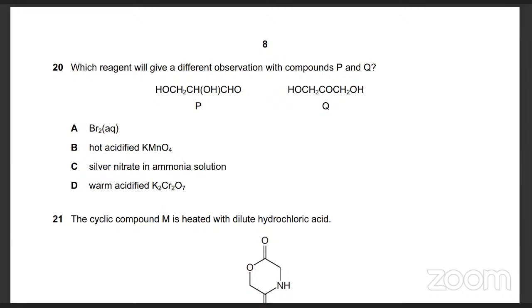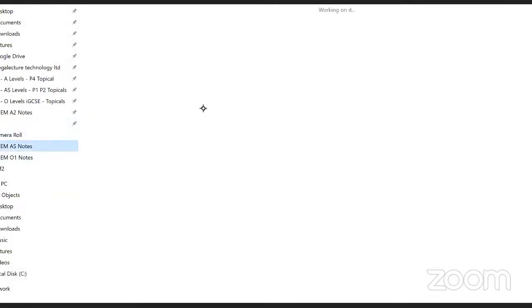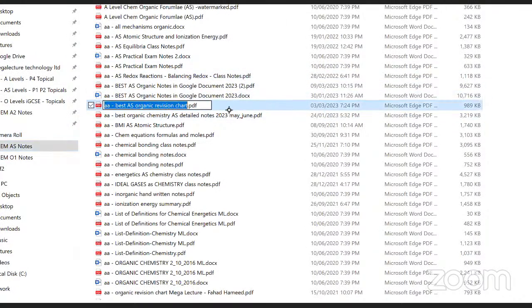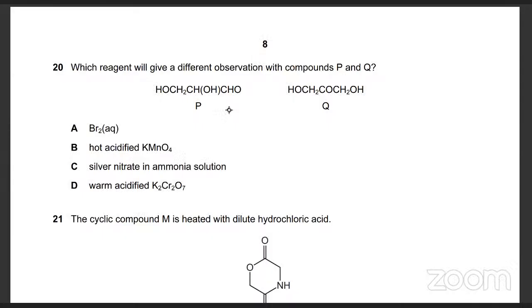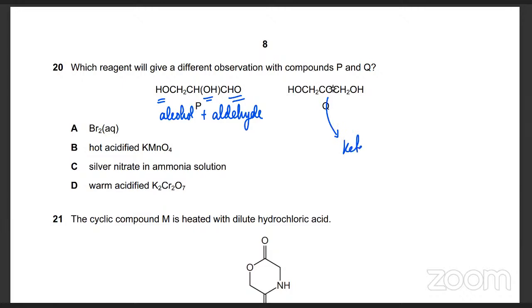The question is: which reagent will give a different observation with compounds P and Q? Starting with P and Q — this one is an aldehyde, this is a primary alcohol, this one is also a primary alcohol, this is secondary, and this is an aldehyde. While this one is a ketone in the middle — that's a ketone, C double bond in the middle — and you have two primary alcohols.